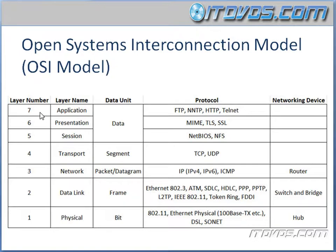We're going to start at layer 7, which is the application layer. The data unit at this layer is going to be the actual data itself. Let's look at the protocols used at the application layer — this is just an example of a couple, as there are a lot of different protocols used at this layer: FTP, NNTP, HTTP, and Telnet.